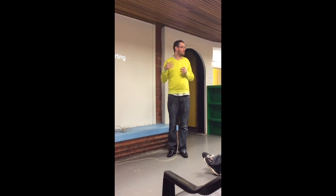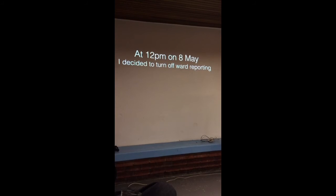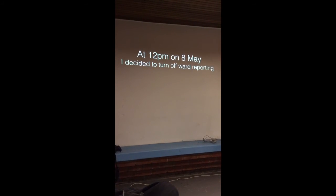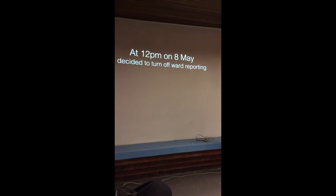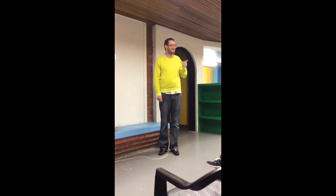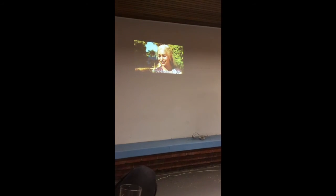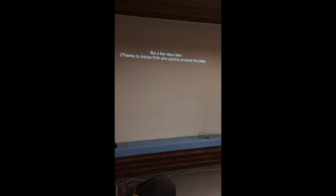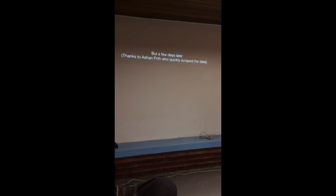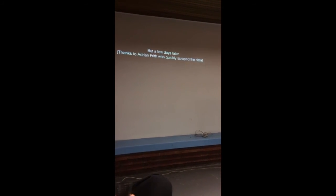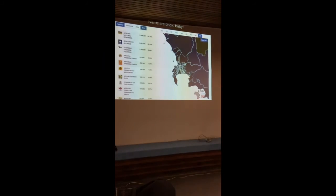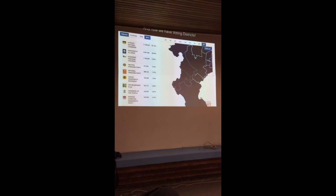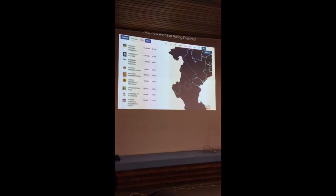Eventually I realized this was a losing battle — the ward numbers were wrong and I was never going to get all the ward data from voting districts anyway. So we cut the voting districts. People had noticed the numbers were wrong and were very upset — understandably. It was fine on provincial and municipality level, but the wards had a quick disconnect where you'd get more people in a ward than exist in the municipality. So I decided to turn off ward reporting at about 12pm. A few days later after the election, the IEC released the official spreadsheet.